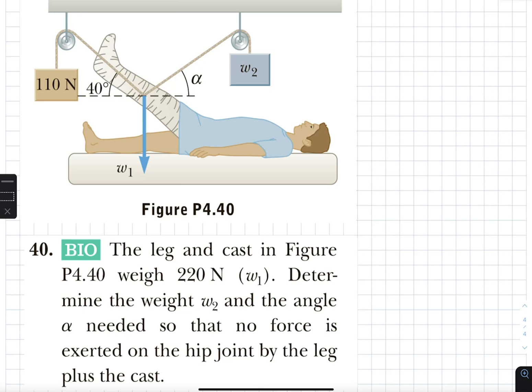Our next example, problem number 40. Again, we have our equilibrium, all forces. In this case, we don't have any vertical rope.